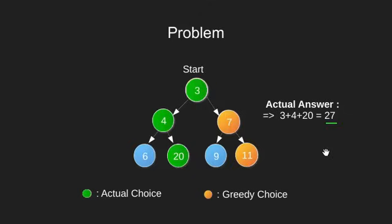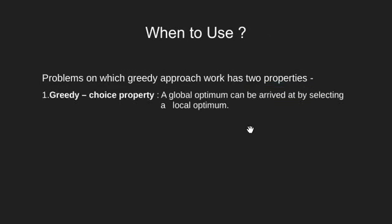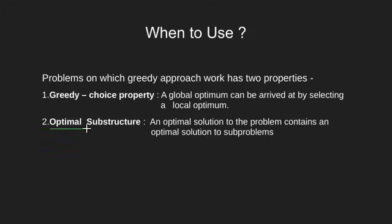So when are we supposed to use greedy methods? All problems which are generally solved using greedy algorithm satisfy two properties. The greedy choice property, that is making the best choice at a moment leading to a global optimum. Next property is the optimal substructure. Problems whose optimal solution can be constructed efficiently from optimal solution of its sub-problems.